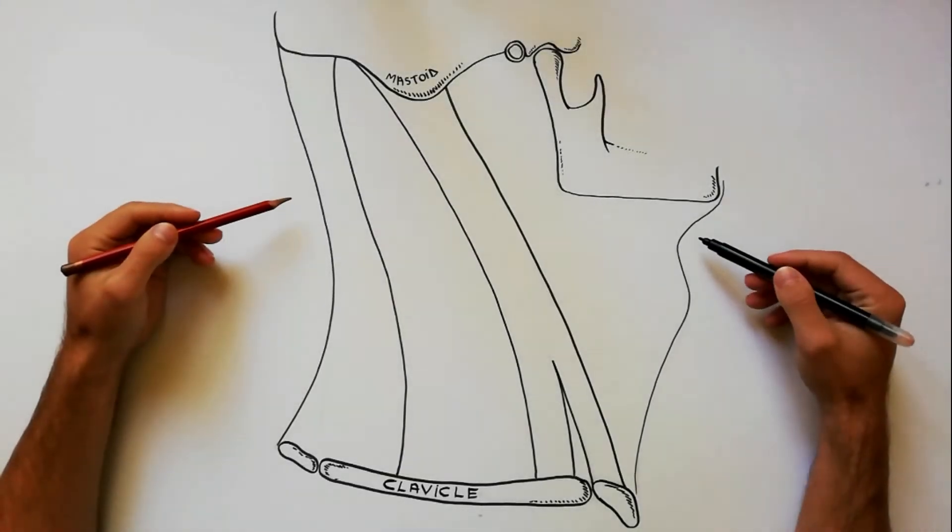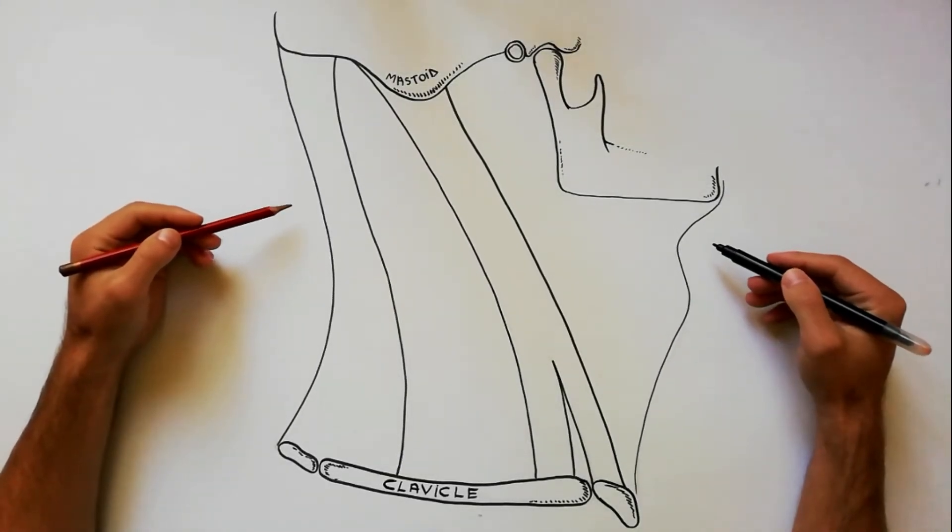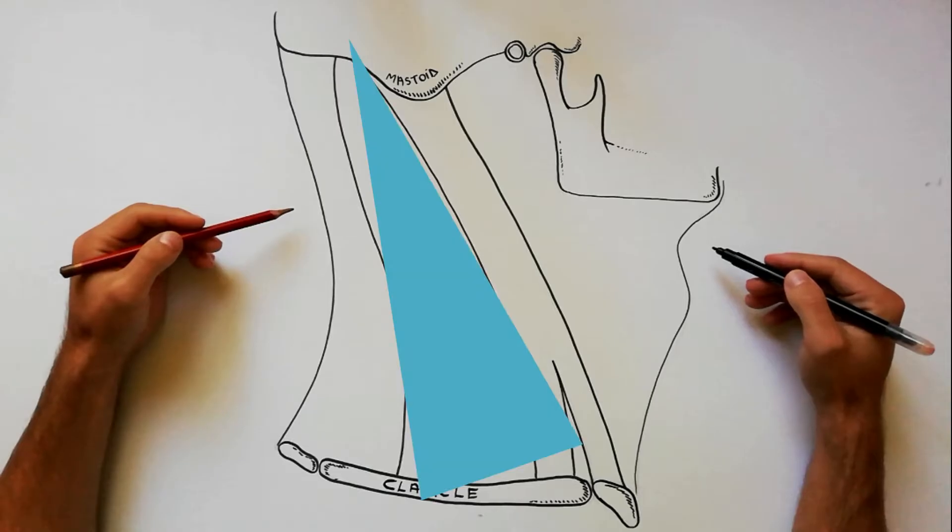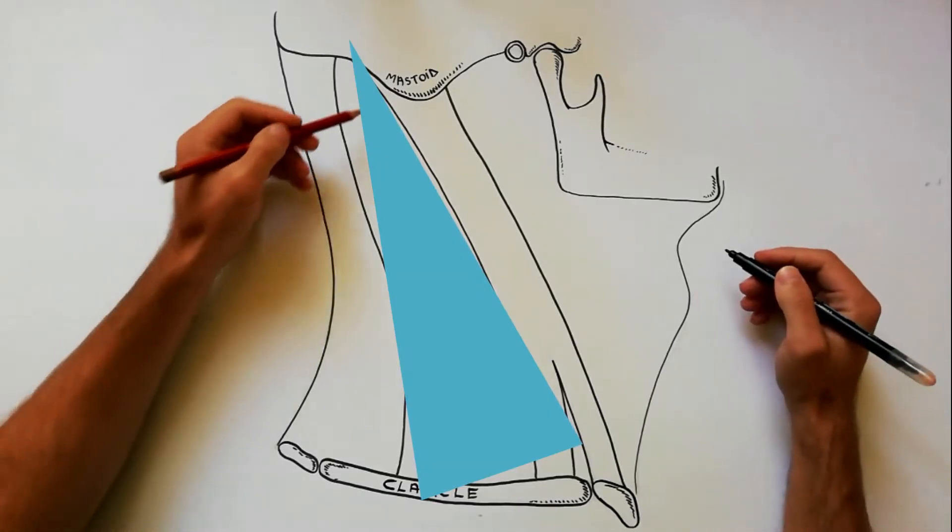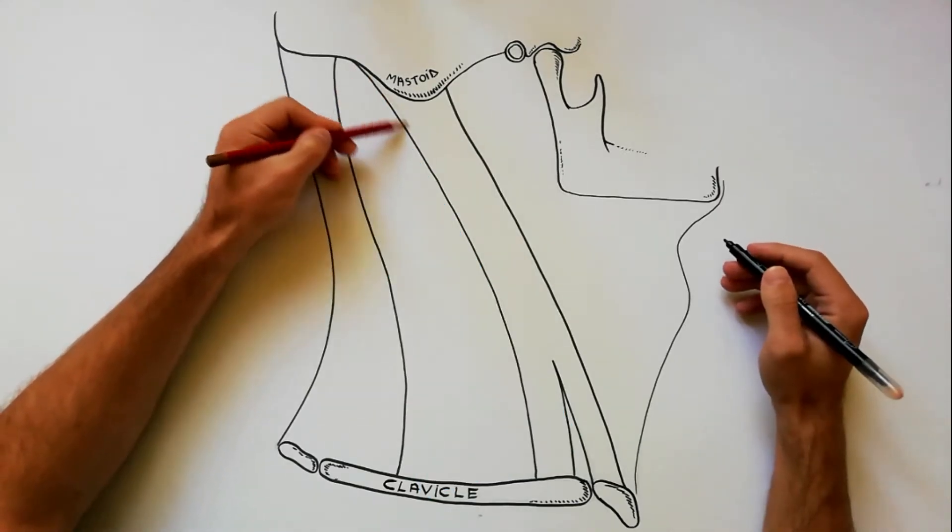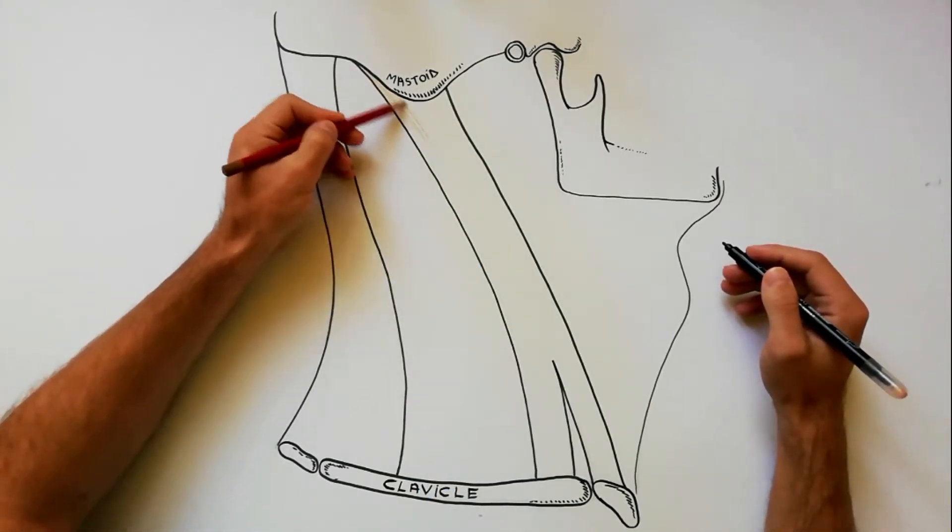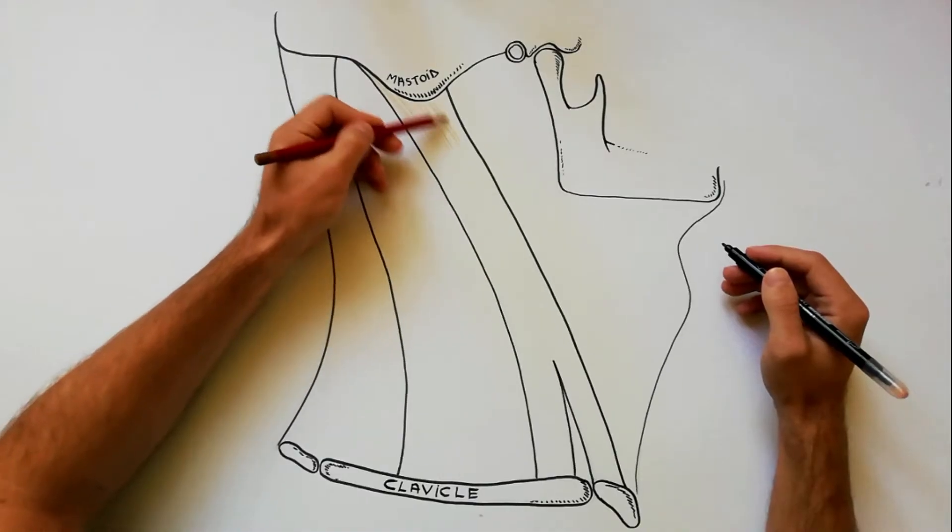The posterior triangle of the neck is the triangular space on the side of neck behind the sternocleidomastoid muscle. Its apex is directed upwards and backwards towards the mastoid process and base downwards towards the clavicle.